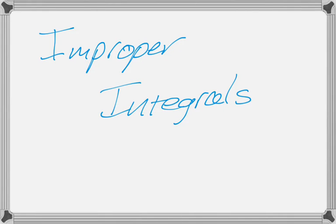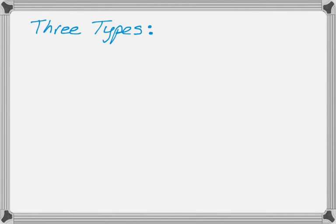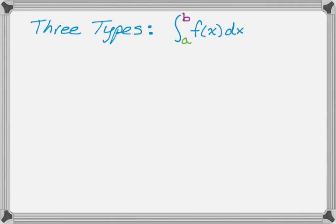We're going to talk about improper integrals. There are three types of improper integrals. Definite integrals look like this: the integral from a to b of f of x dx. The relationship between a, b, and f of x, the function, will determine if this is improper or not.